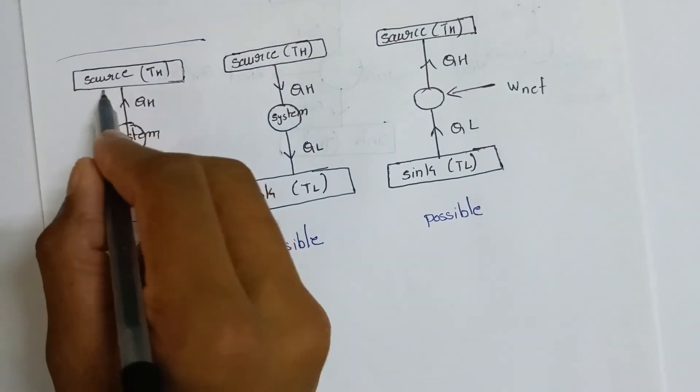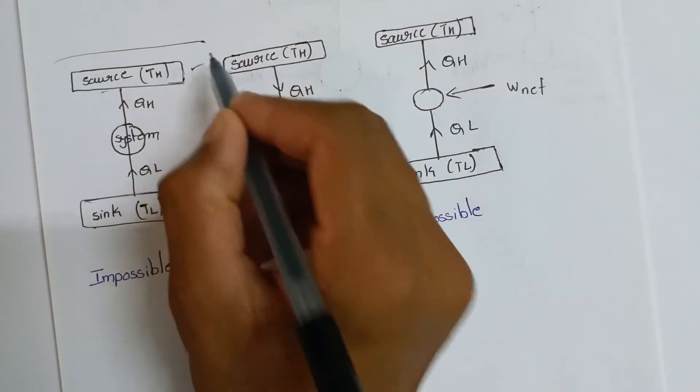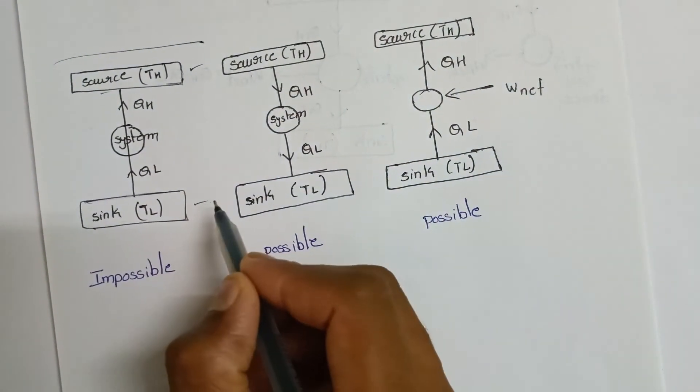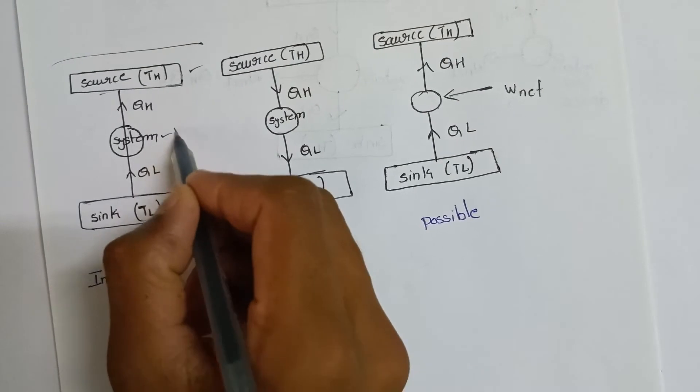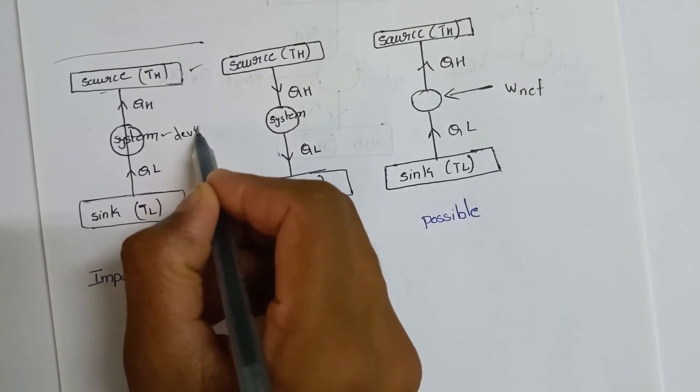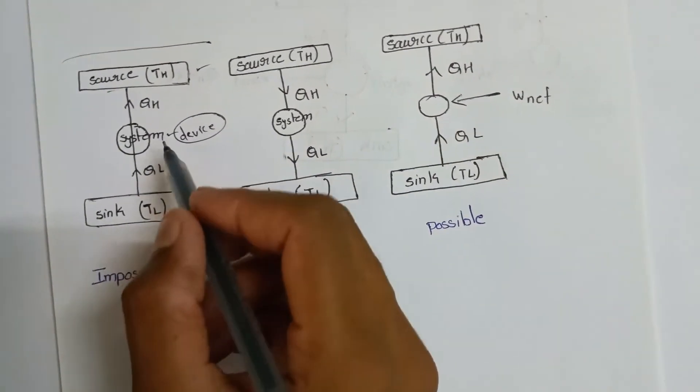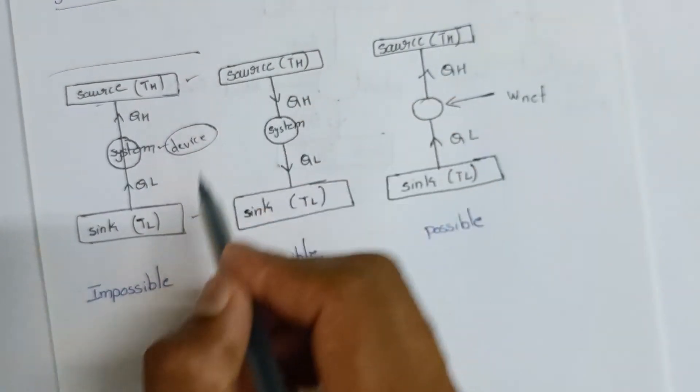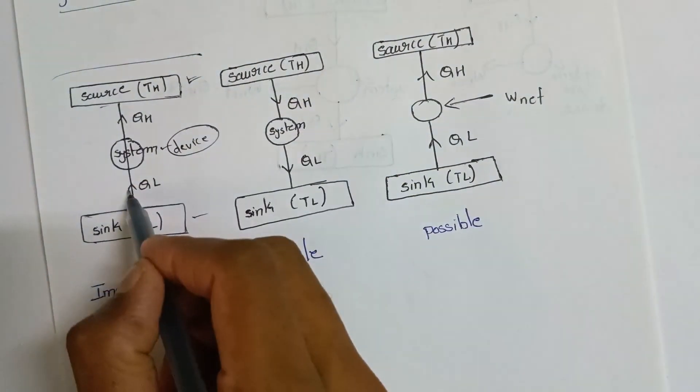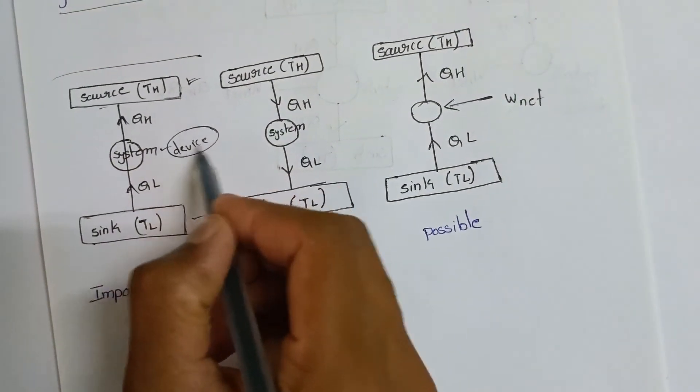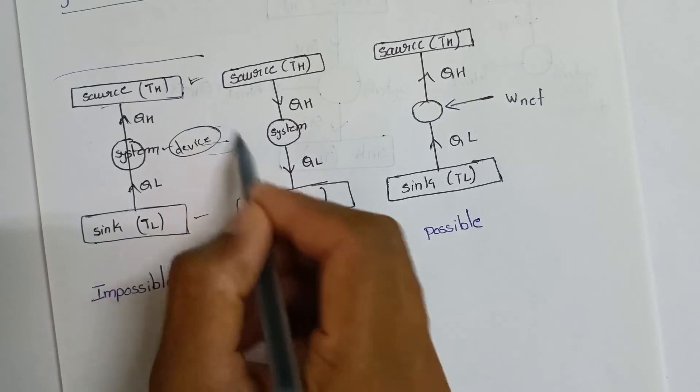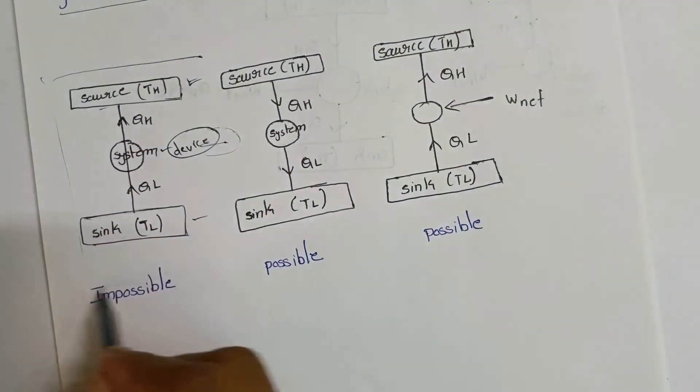In Clausius statement, source is for high temperature and sink is for low temperature. The Clausius statement diagram shows: from low temperature body to high temperature body, external work input is required.